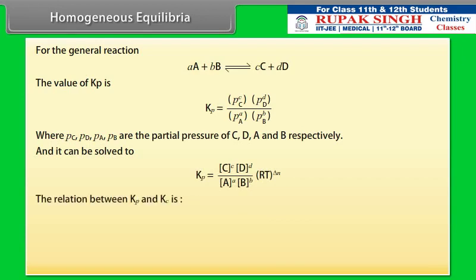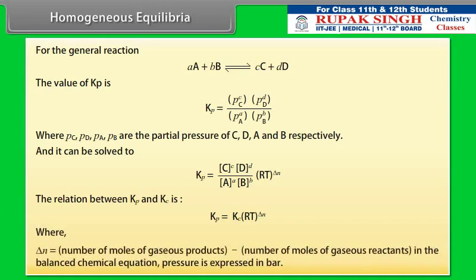The relation between Kp and Kc is: Kp equals Kc multiplied by (RT) raised to the power delta-N, where delta-N equals the number of moles of gaseous products minus the number of moles of gaseous reactants in the balanced chemical equation. Pressure is expressed in bar.